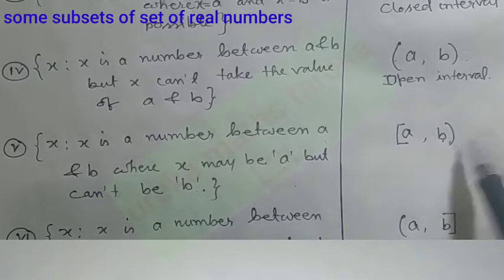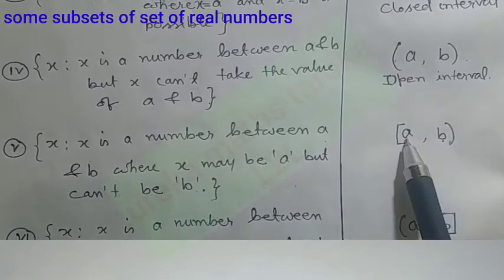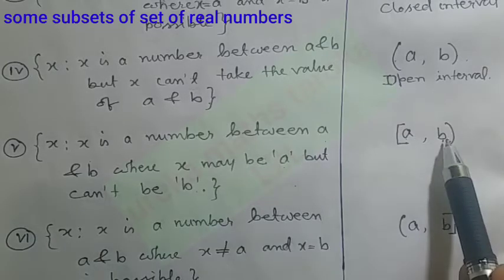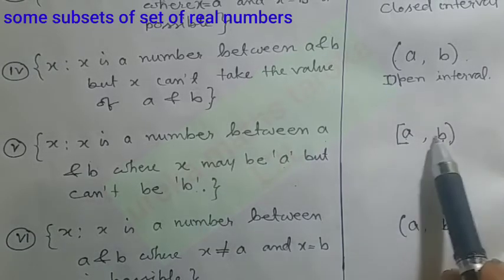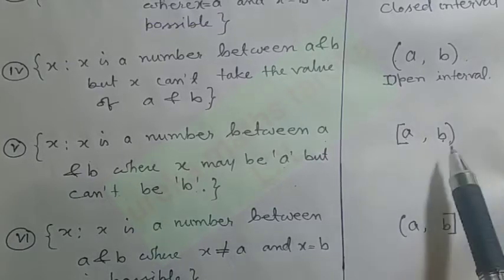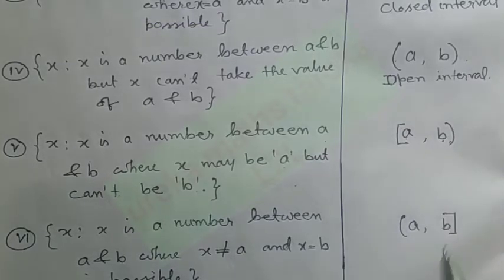This is called semi-open or semi-closed. Similarly, when b is included but a is excluded, we have another semi-closed or semi-open interval.